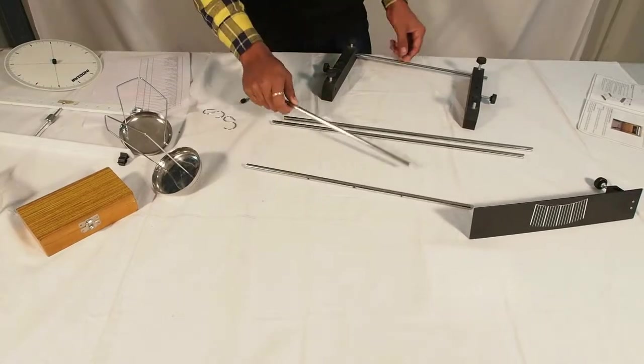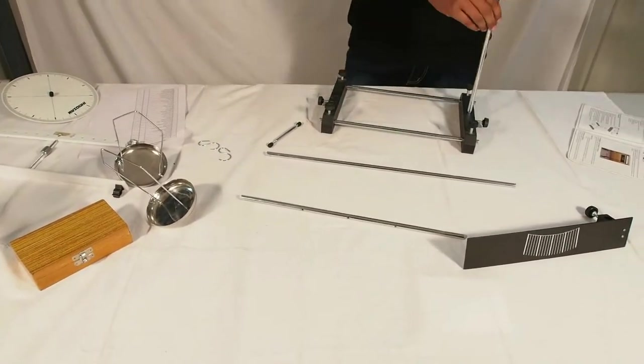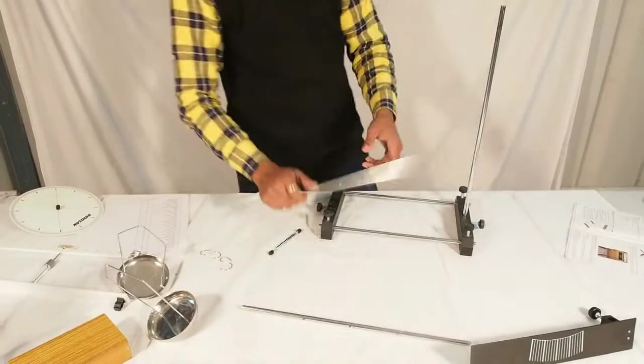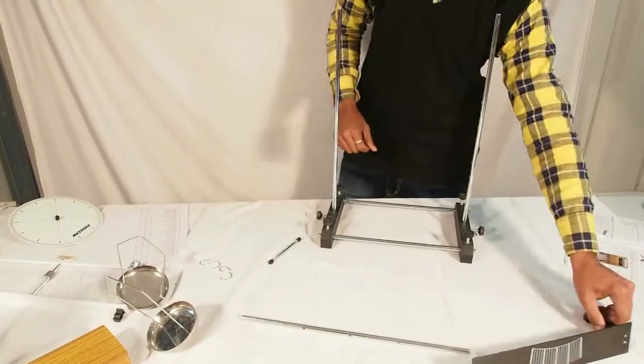Now place the two base supports on the table and join them by means of two 35 centimeter rods as shown. Now place the two 50 centimeter rods in the central holes pointing upwards.